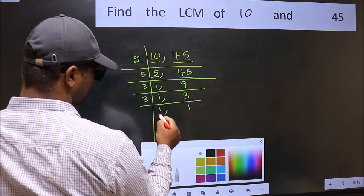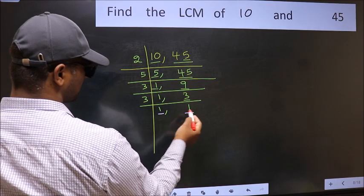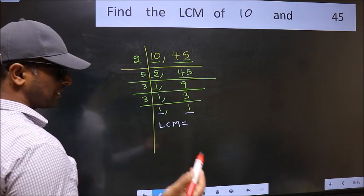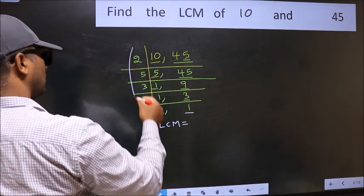So we got 1 in both the places. So our LCM is the product of these numbers.